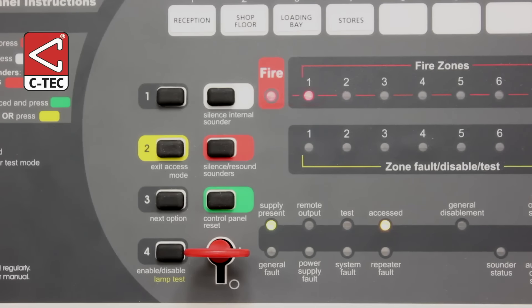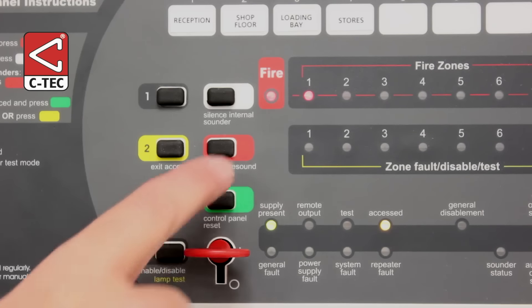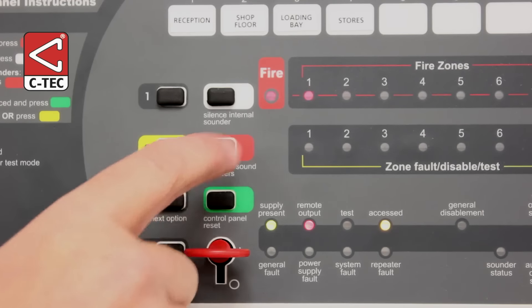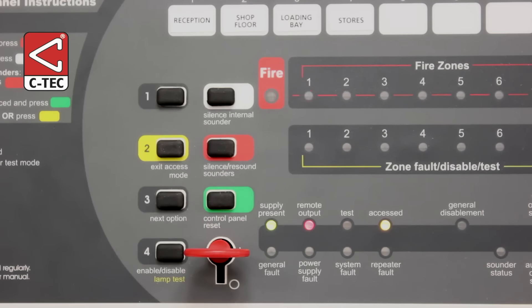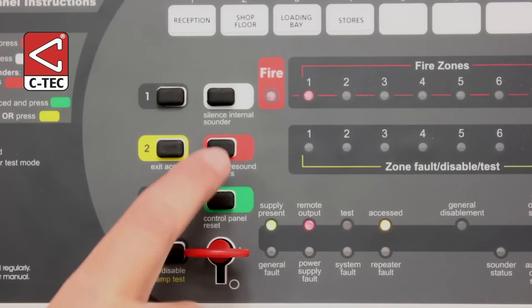The Remote Output indicator will also turn off. If for any reason you need to manually reactivate the alarm sounders, press the Silence/Resound Sounders button once again. Likewise, to again silence the sounders, press the Silence/Resound Sounders button once more.